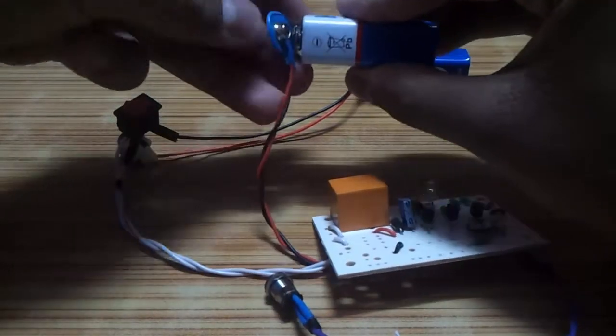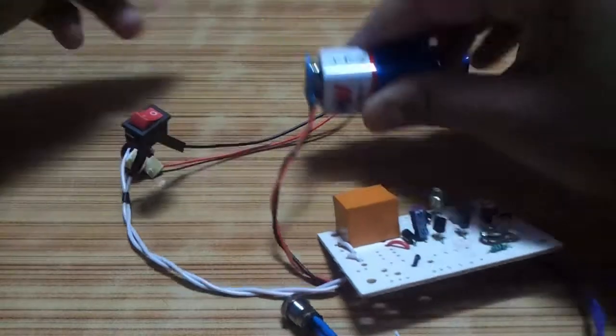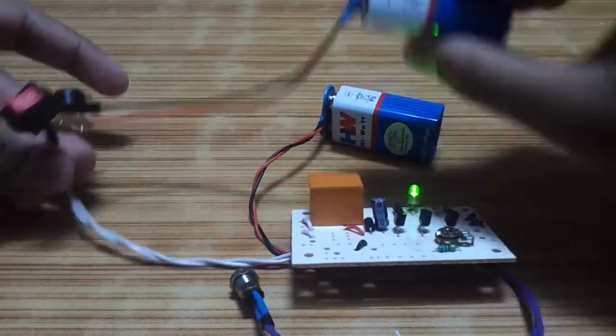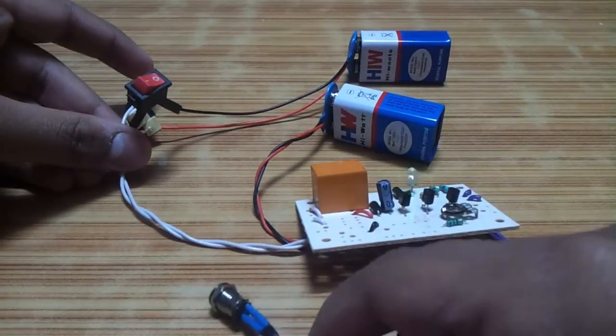As you can see I've completed all the connections and our circuit is now complete. When the switch is on and there is no light falling on the sensor the buzzer will make sound.